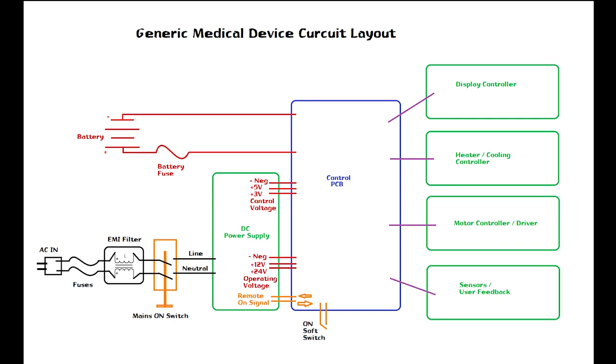Now there's two types of voltages that are usually output by DC power supply. You'll have your control voltage at 5 volts to 3 volts DC, which is for your display and your LED indicators and stuff like that.